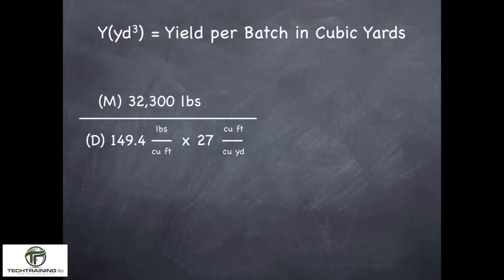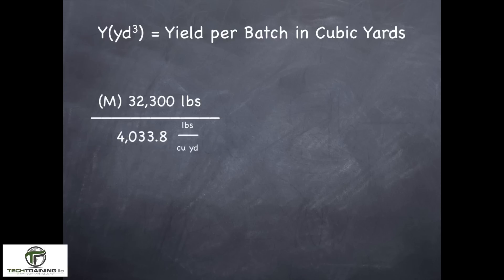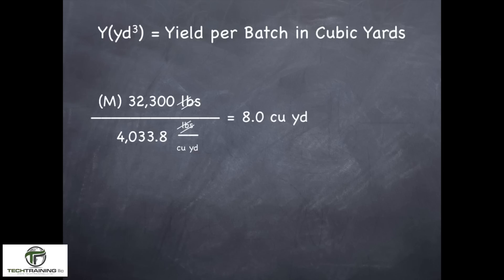Now to calculate the yield in cubic yards, the equation is similar. We take the total weight of all the materials batched and divide it by the unit weight times 27. The 27 comes from the amount of cubic feet in a cubic yard. In the denominator, cubic feet can eliminate cubic feet. If we do the multiplication in the denominator, we wind up with 4,033.8 pounds of material per cubic yard. And if we do the division, pounds will eliminate pounds, and we wind up with exactly 8 cubic yards of material.